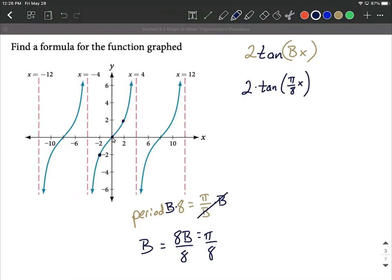It also doesn't look like this graph has been picked up and moved up or down. So I don't have a number added or subtracted from the entire function at the end. That's the formula for this graph. Hope this helps out as you're trying to go from a graph to the function itself. Good luck.